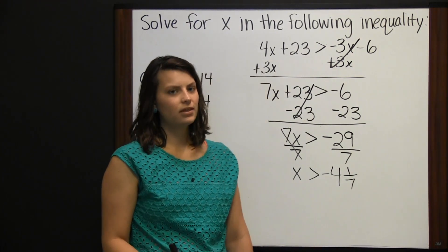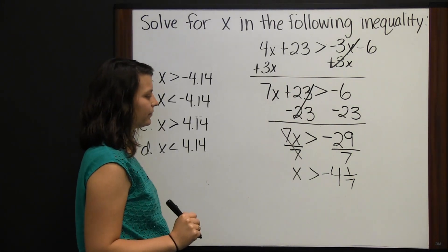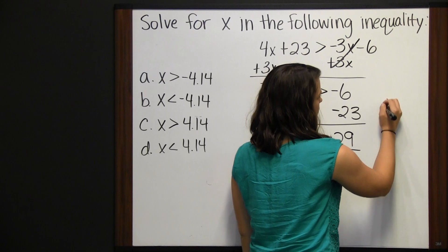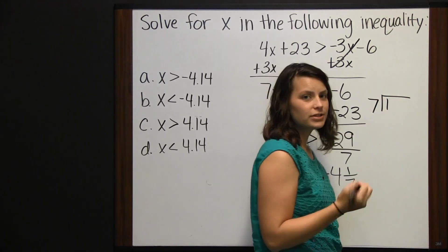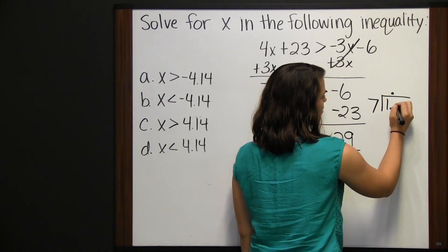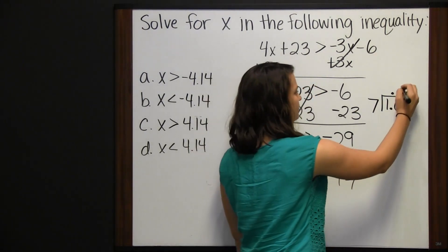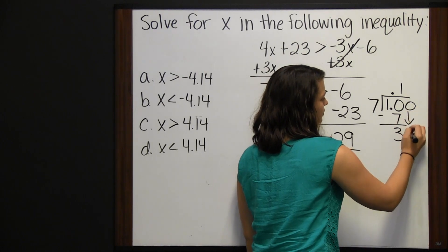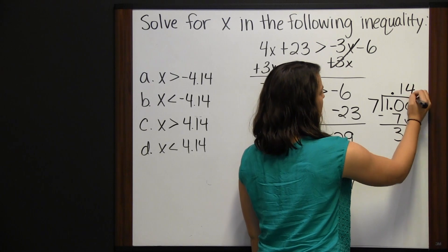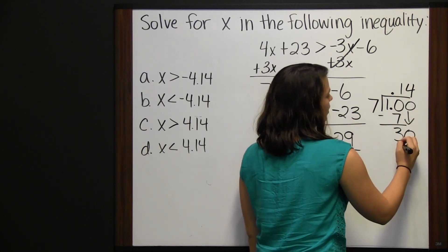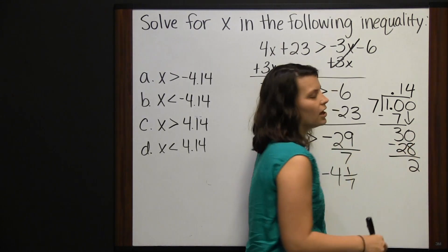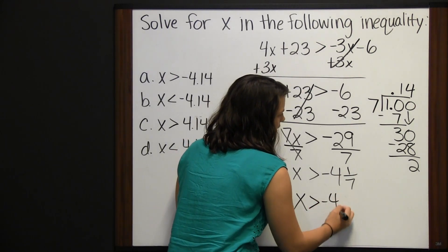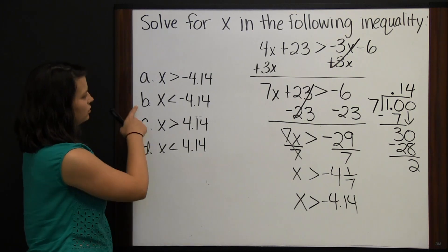So x is greater than negative 4 and one-seventh. Since the answer choices are in decimal form, we convert one-seventh by dividing: 7 doesn't go into 1, so add a decimal and zero; 7 goes into 10 once; 7 times 1 is 7; subtract to get 3; bring down another zero; 7 goes into 30 four times; 7 times 4 is 28; remainder 2. So one-seventh is approximately 0.14. Therefore x is greater than negative 4.14, answer choice A.